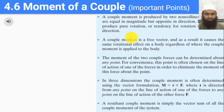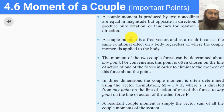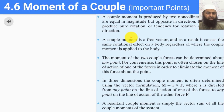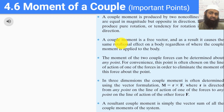To recap everything so far: we have defined a couple moment. First, couple moments are useful because a couple moment vector is a free vector, so we can choose whichever point to be our reference point and still get the same moment. The second reason is that a couple does not produce any translation but only produces rotation. We also saw how to use vector and scalar analysis to solve for couple moments.